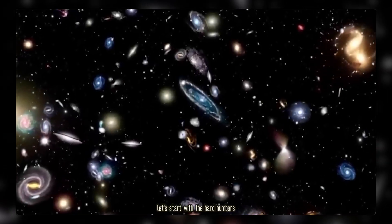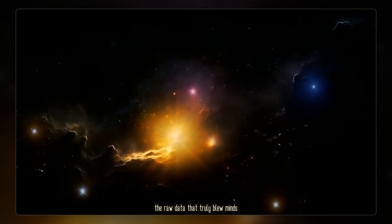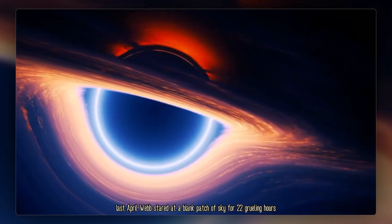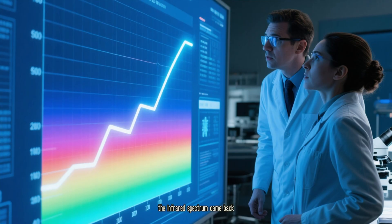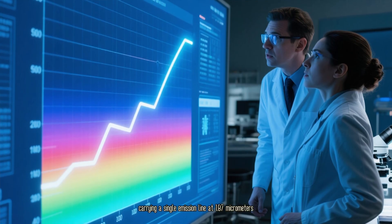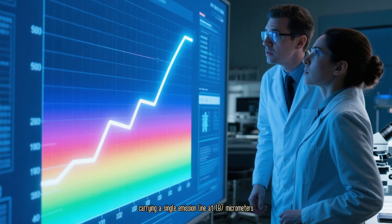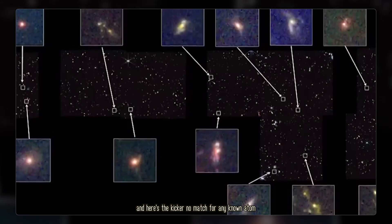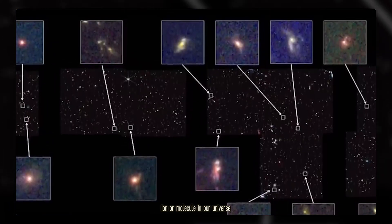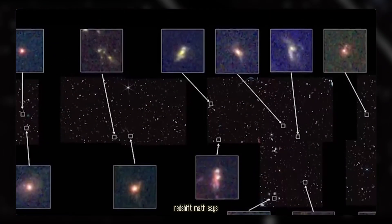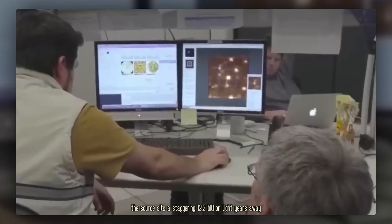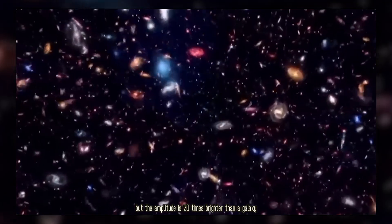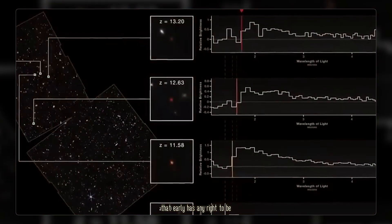Let's start with the hard numbers, the raw data that truly blew minds. Last April, Webb stared at a blank patch of sky for 22 grueling hours. The infrared spectrum came back carrying a single emission line at 1.87 micrometers. And here's the kicker. No match for any known atom, ion, or molecule in our universe. Redshift math says the source sits a staggering 13.2 billion light years away. But the amplitude is 20 times brighter than a galaxy that early has any right to be.